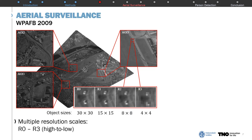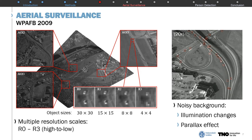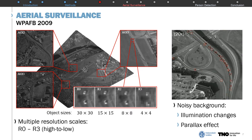We test our approaches for the aerial surveillance application using a publicly available dataset. This dataset contains aerial grayscale footage which has been auto-rectified to ensure recorded frames overlap, simulating a static camera. It contains a single vehicle class that needs to be detected. Following literature, multiple areas of interest are cropped from the complete scene to create independent train and evaluation sets. In our experiments, models were trained on areas 1 and 3 and evaluated on area 2. The dataset contains multiple resolution scales, denoted R0 to R3, where object sizes range from around 30 by 30 pixels on R0 down to less than 4 by 4 pixels on R3. Besides containing tiny objects, this dataset is also challenging due to noisy backgrounds caused by illumination changes and parallax effects, as shown in this sped-up video.